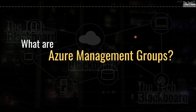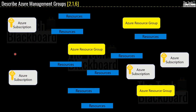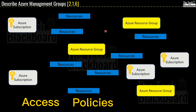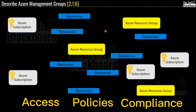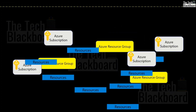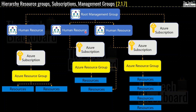Now let's understand Azure management groups, which are the highest level of hierarchy — this is section 2.1.6. Suppose you have many Azure subscriptions, resource groups, and a lot of Azure resources. Things can really become out of control as your company grows in size. You also have to manage access policies and compliance for all these resources. The solution is Azure management groups — they provide a level of scope above the Azure subscription, allowing you to organize subscriptions into containers called management groups and apply governance conditions to them.